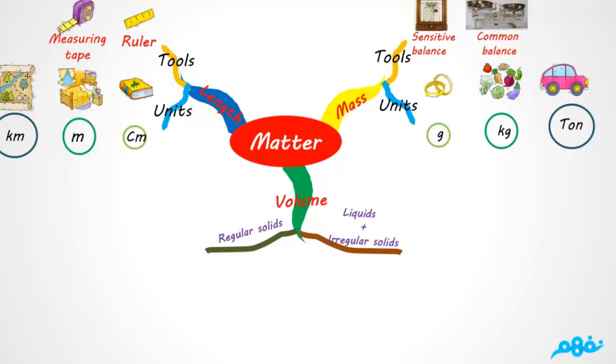For regular solids, to measure the volume of a regular solid body like a cube, we will use the tool ruler and the unit cubic centimeter, and calculate the volume from the relation: volume equals length times width times height.